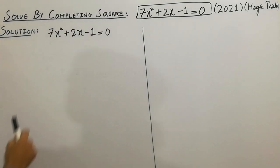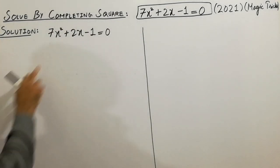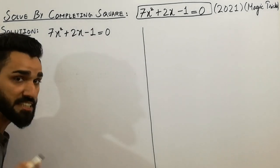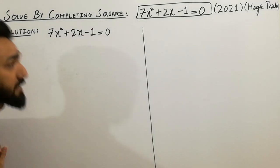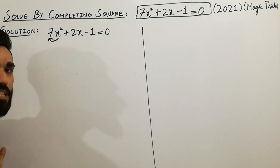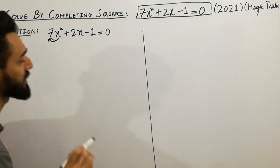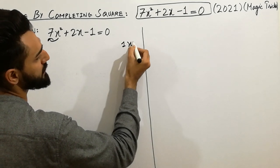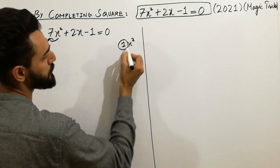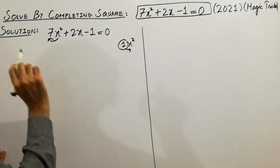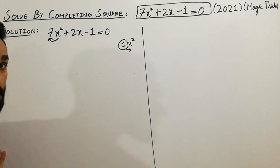Here the equation is given: 7x squared plus 2x minus 1 is equal to 0. Must remember, in completing scale method, the coefficient of x squared must be equal to 1. This is the rule of completing scale — must remember.